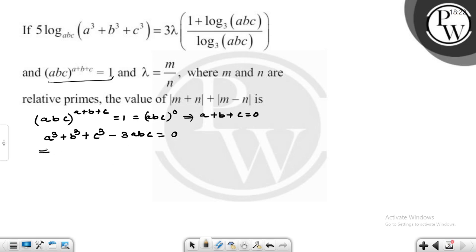But if a + b + c = 0, then a³ + b³ + c³ equals three times abc.